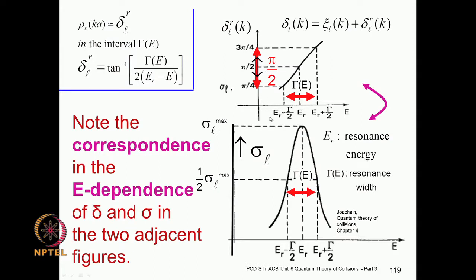Now observe the correspondence between the two figures, both plotted against energy. In the upper figure is the resonance phase shift delta^r, and in the lower figure is the scattering cross section. The energy axes have the same scaling, so the point E_r − Gamma/2 in the upper figure aligns with the point E_r − Gamma/2 in the lower figure.